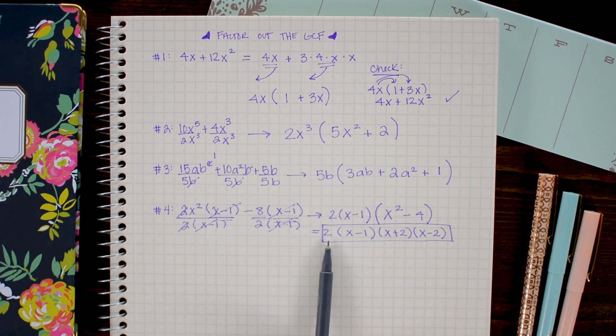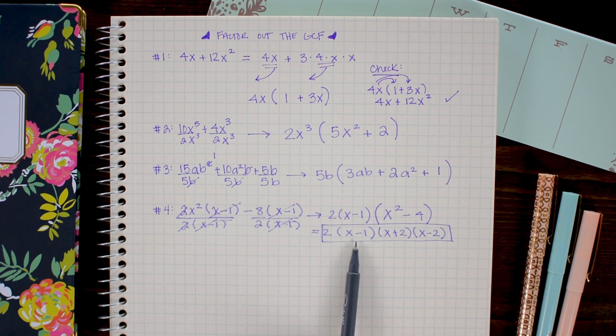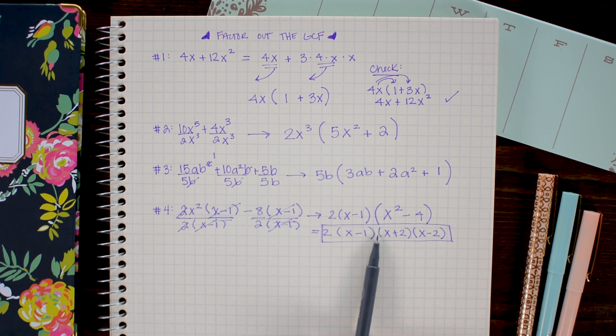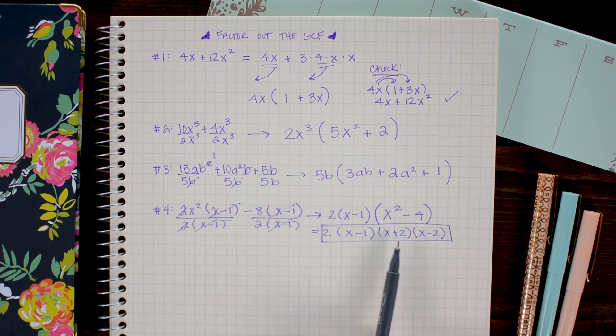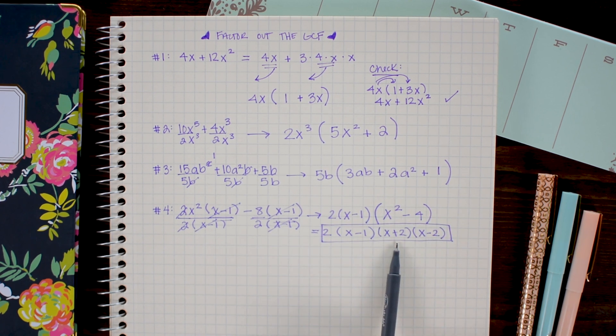So for our answer we get 2 times the quantity x minus 1 times the quantity x plus 2 times the quantity x minus 2. Again this factoring of perfect squares is something we haven't talked about but I will be talking about it in an upcoming video. So keep an eye out for that if it's new to you.